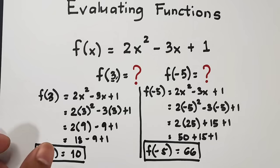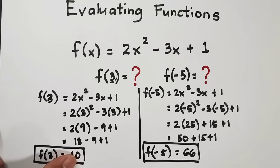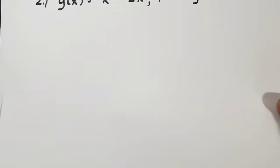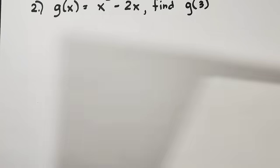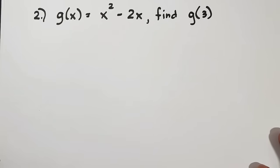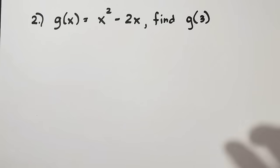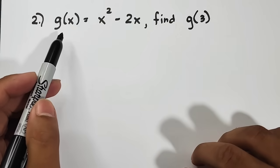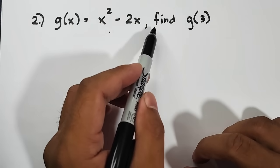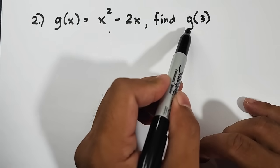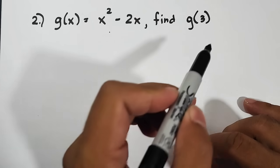Now, I hope you learned from our first example. And let us continue with our second example. For the second example, we are given here the function g. g of x is equal to x squared minus 2x. And then we are asked to find, or to evaluate, g of 3.